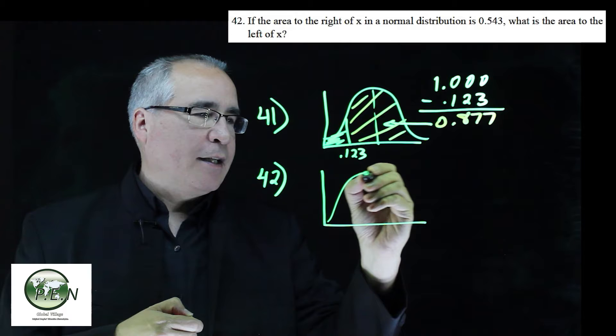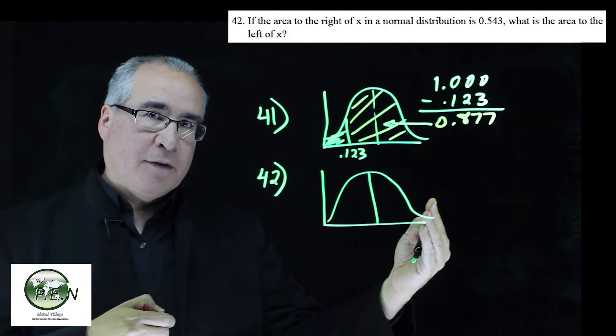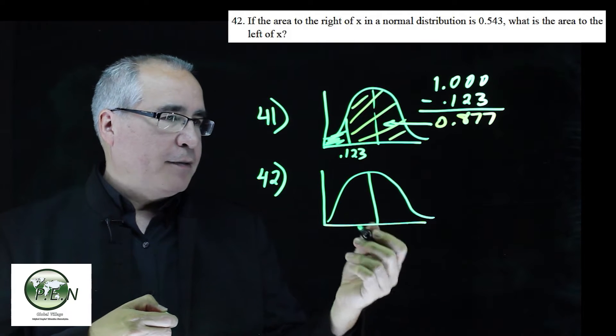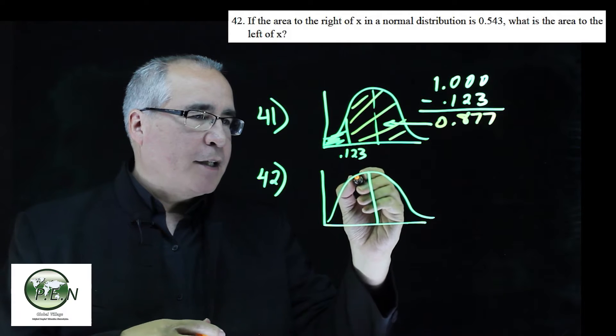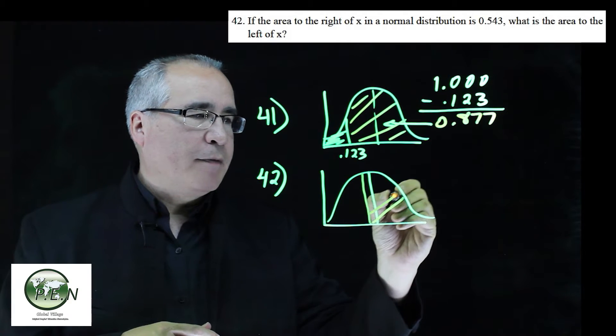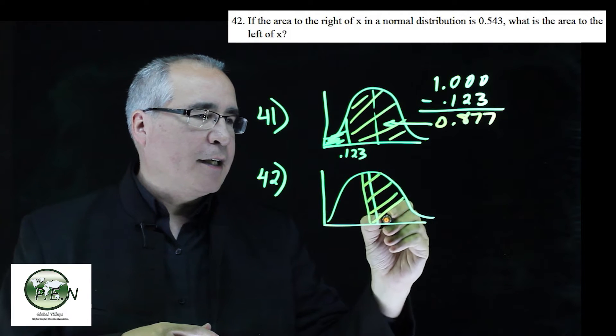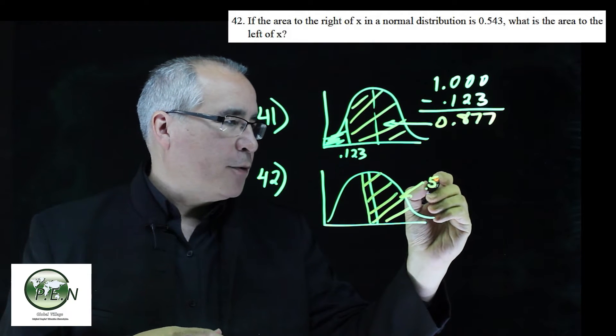So we've got this. Here's our mean. We know to the right of the mean is 50%. So 54%, probably somewhere like here is an estimate. What we're being told is that this area is 0.543.